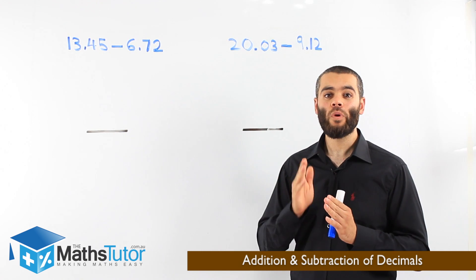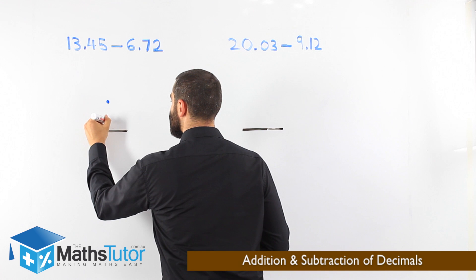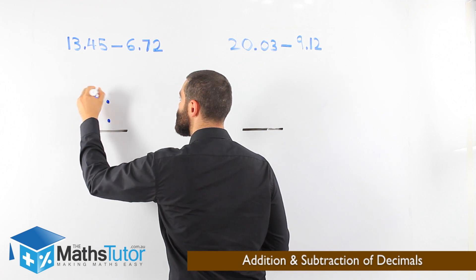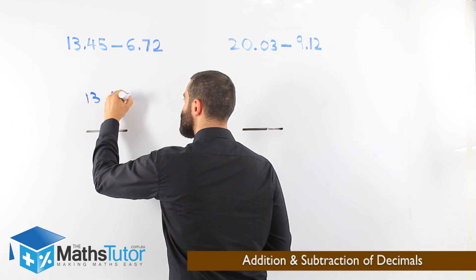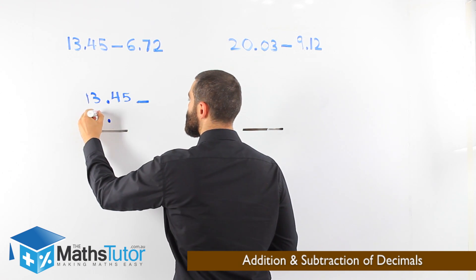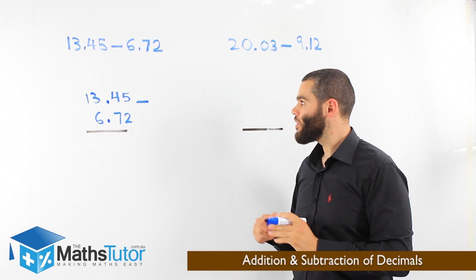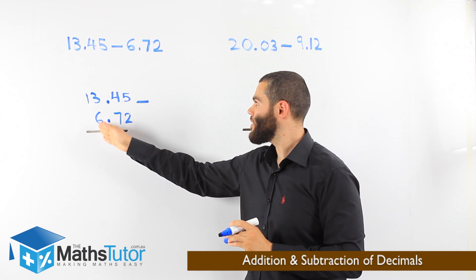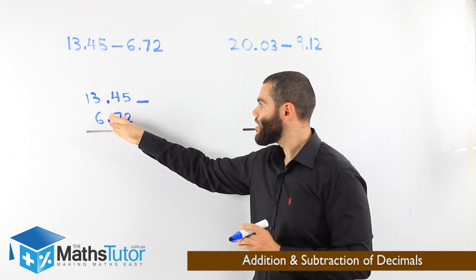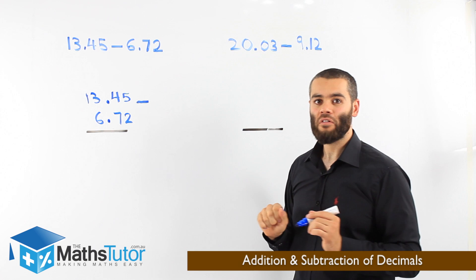The rule is, again, we put the point under the point. So, we align the points up, which makes it easy for us to align the rest of the numbers. 13.45 take away 6.72. Now, what do you realize? The units are under each other. The tenths are under each other. And the hundredths are under each other. So, always, the points will allow us to align all the numbers correctly under one another. Now, we'll do our subtraction.